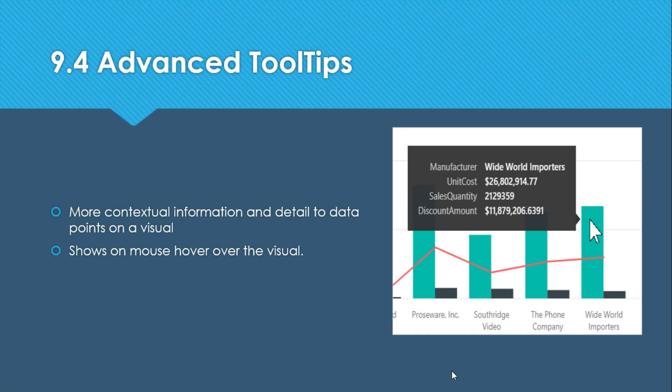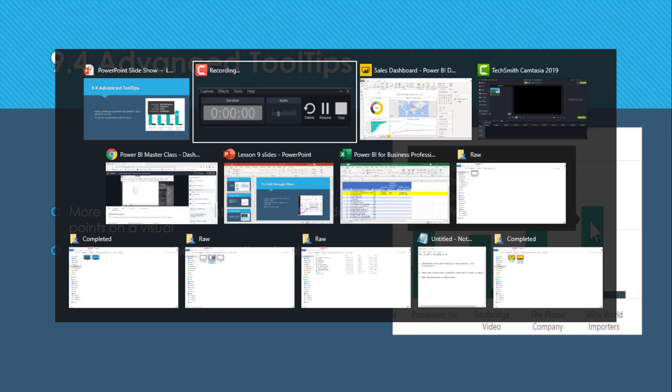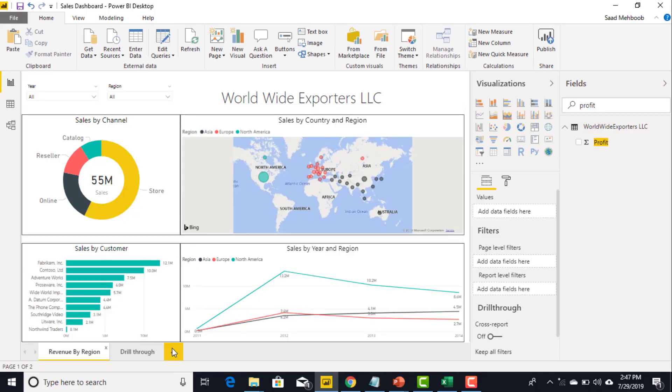Hi, this is Saad Maboo and welcome to video 9.4: Advanced Tooltips. In this video I'll demonstrate that sometimes when you hover the mouse over a visual, you are given by default some information as a tooltip. You can customize it to show more detail, or you can entirely create a new visual as part of the tooltip, which takes your visualization experience to an entirely new level.